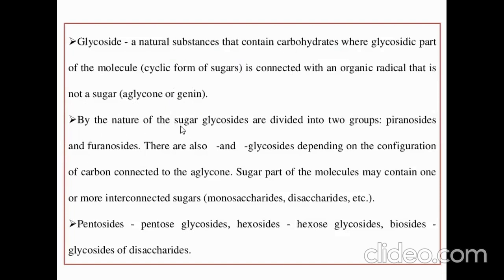By the nature of the sugar, glycosides are divided into two groups: pyranosides and furanosides. There are also glycosides depending on the configuration of the carbon connected to the aglycon. The sugar part of the molecule may contain one or more interconnected sugars like monosaccharides, disaccharides, trisaccharides, and so on — pentose glycosides, hexose glycosides, and disaccharide glycosides.